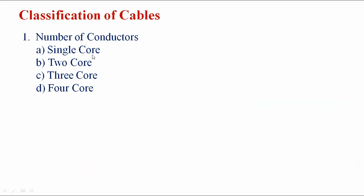Single-core cable is used only for industrial applications. Two-core cable is used for distribution purposes. Three-core cable is used in transmission lines — three-phase, three-wire systems. Four-core cable is used for three-phase, four-wire systems. 'Core' is another name for conductor.